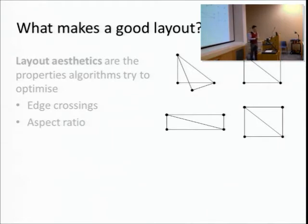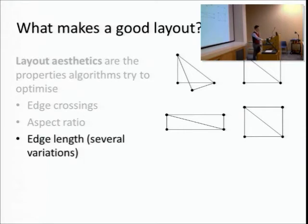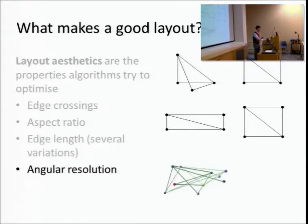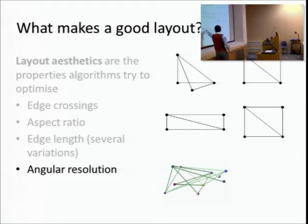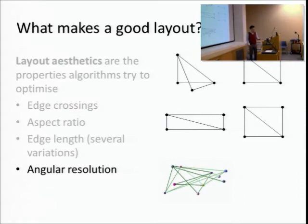Other aesthetics include aspect ratio - trying to make results closer to a square shape rather than a very thin long one. You can also try to reduce edge lengths. Another aesthetic is angular resolution - trying to improve the minimum angle between two edges. A bad example shows many small angles between edges; improving those and making small angles bigger is thought to make things easier to see.